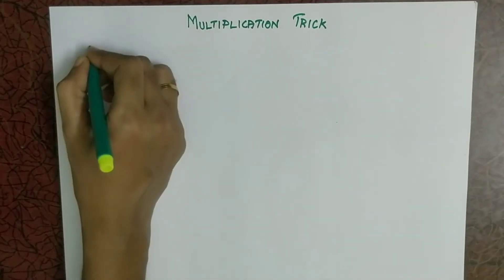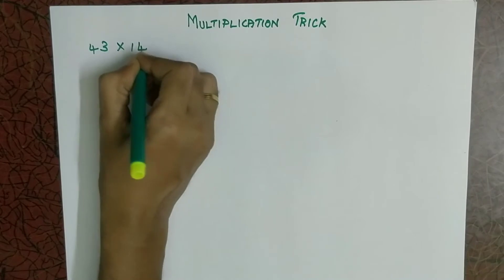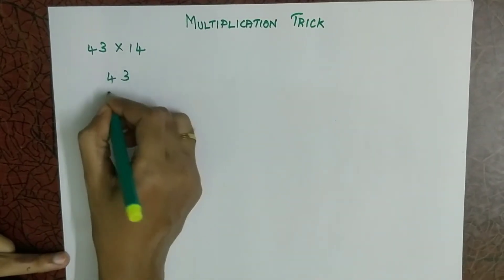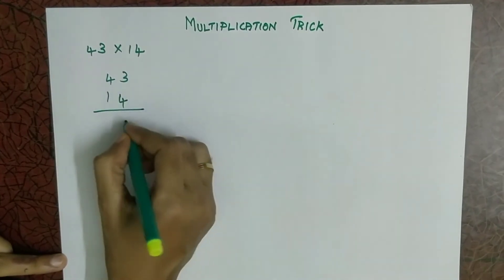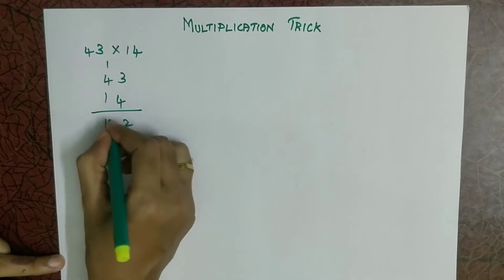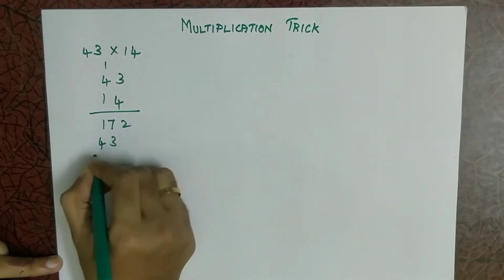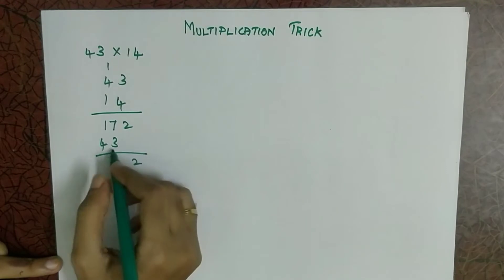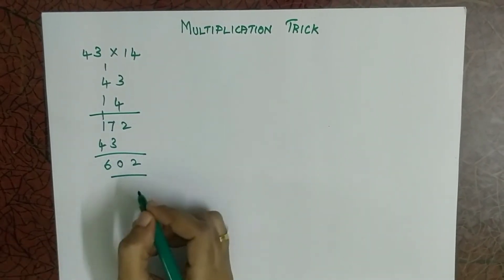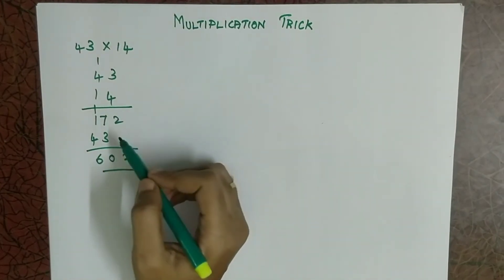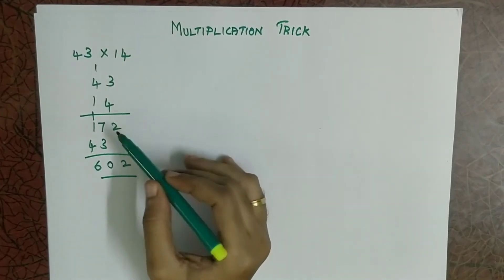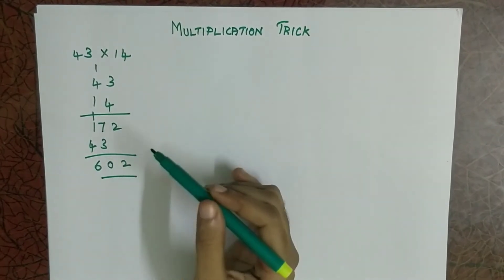If you see 43 into 14, the usual multiplication is 4 3s are 12, 1 and 4 4s are 16 plus 1, 17. 1 3s are 3, 1 4s are 4. So whoever knows the multiplication table it is easy for them to solve, but even then this method has more steps so it consumes more of your time.